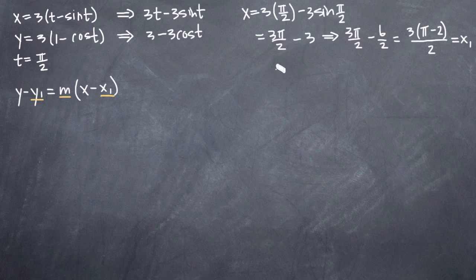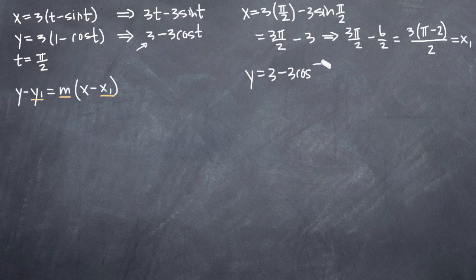Now we need to find y₁, and we'll do that by plugging pi over 2 in for t into our y equation. We'll get y equals 3 minus 3 cosine of pi over 2. When we evaluate cosine of pi over 2, we get 0, so we get 3 minus 0, which is just 3. So y₁ equals 3.